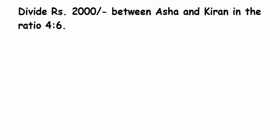Hey everyone, here is a question from ratio and proportion, and this kind of question is really important from an exam point of view. The question is: divide rupees 2000 between Asha and Kiran in the ratio 4 is to 6. We will divide the amount 2000 in a 4 is to 6 way.